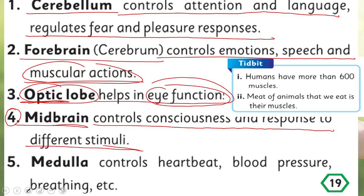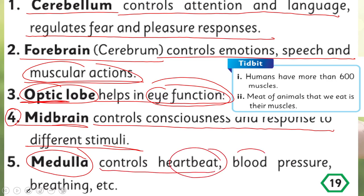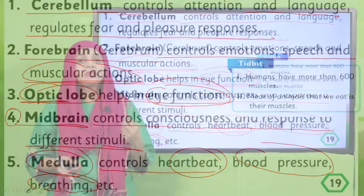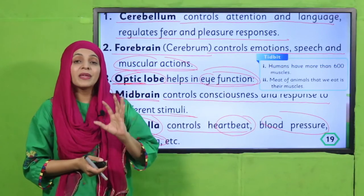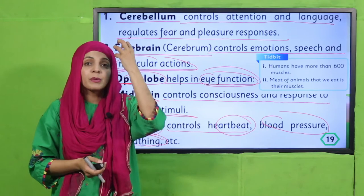Then comes the medulla, which controls the heartbeat, blood pressure, and breathing. These important body functions are all controlled by the medulla. So you can see that your brain controls your whole body.